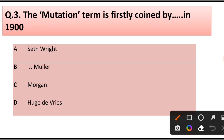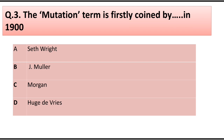Question number 3. The term 'mutation' was first coined by: Seth Reed, J. Muller, Morgan, or Hugo de Vries. Answer is option D: Hugo de Vries.